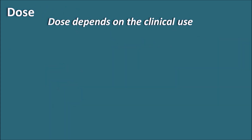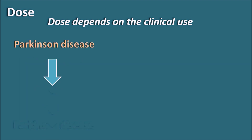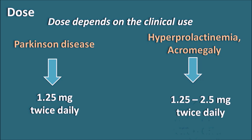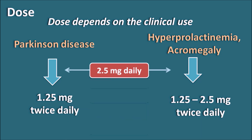For Parkinson's disease, Bromocriptine can be given as 1.25 mg twice daily. In the treatment of hyperprolactinemia and acromegaly, it can be started at 1.25 to 2.5 mg twice daily. In both of these situations, the dose can be gradually increased at an increment of 2.5 mg daily. For Parkinson's disease, the maximum dose that can be achieved is 100 mg.